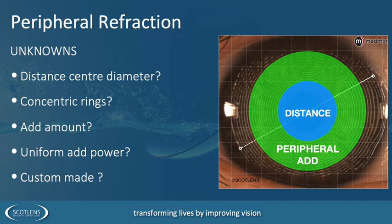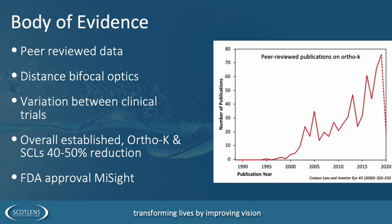We don't know everything about peripheral refraction — that's what makes myopia and myopia control so exciting. We don't know the correct distance diameter, whether we should have concentric rings, varying power, uniform add power, or high add; will we reach a point where we can measure the power profile of the patient's retina and match our contact lens to it? There are now over 200 studies published just on Ortho-K with myopia control, and the collaboration shows a 40–60% reduction in myopia scale with multifocal softs and Ortho-K. FDA approval in the States for MiSight means there are now regulated devices on the market — no longer just theoretical.